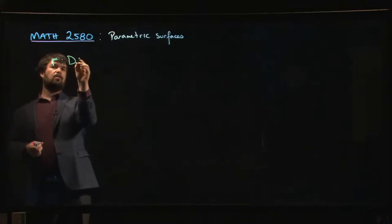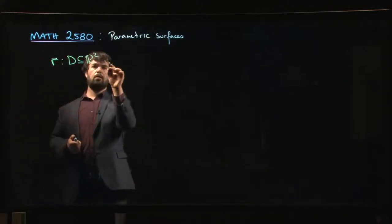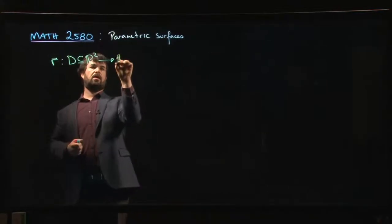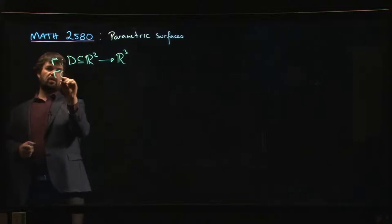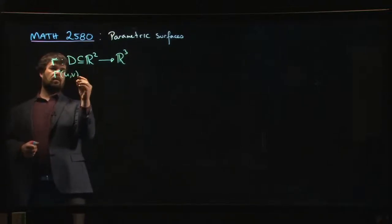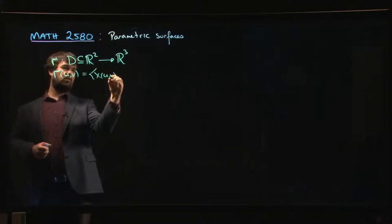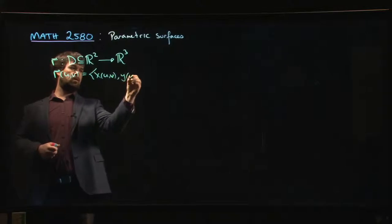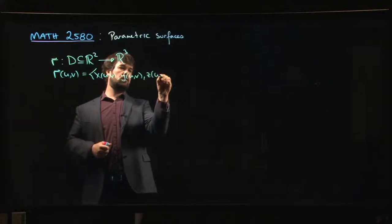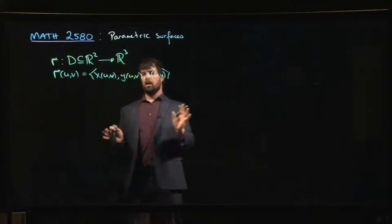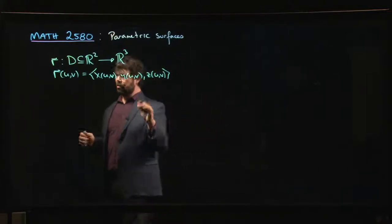So what we're going to have is something which looks like r(u,v) = (x(u,v), y(u,v), z(u,v)). If v's look too similar in your handwriting, maybe you want to use s and t for your parameters, that's fine too.